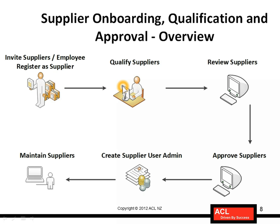Once that is complete, the next step is to qualify the suppliers. The qualification process involves reviewing the information provided by the supplier, conducting site visits, or — if the supplier is a manufacturing supplier — it could also involve sample testing of the products they are supplying to make sure they adhere to the quality standards approved by the buying organization.